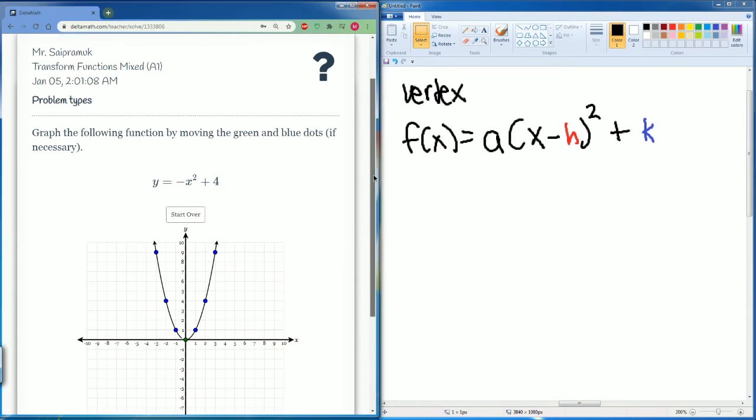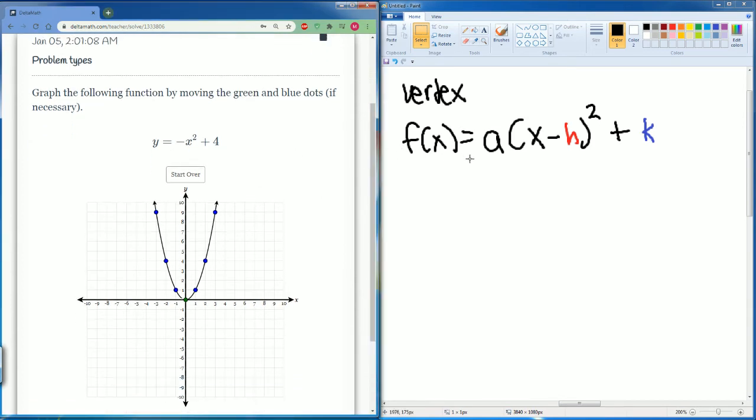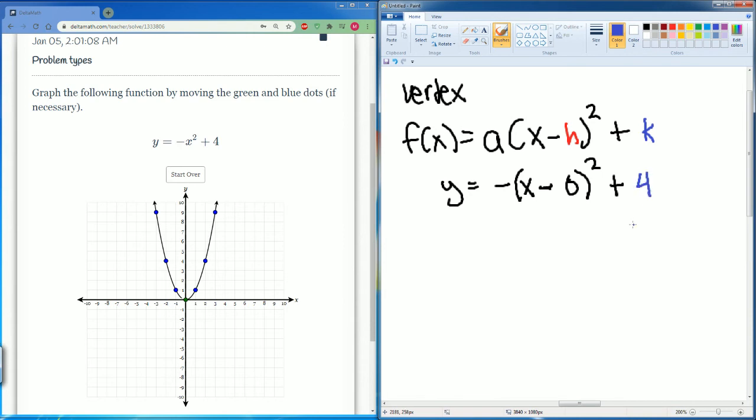So if you have something that looks like this, it's still in vertex form. Let me write it in vertex form. So y is equal to negative x squared. That means that this is really minus 0 here, squared. You don't see that minus 0 here, but it's really here if you would write it like that. And your plus, your k value here is that 4. That's how you write that in vertex form with that minus 0 attached to the x inside the parentheses.